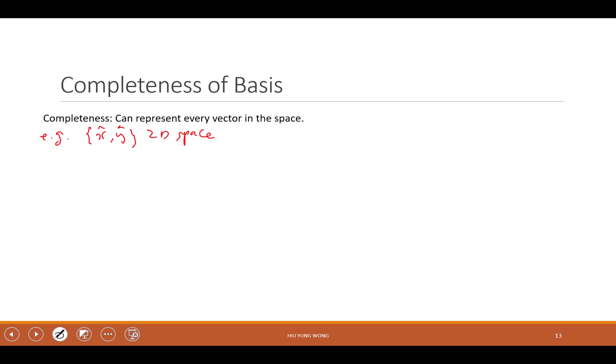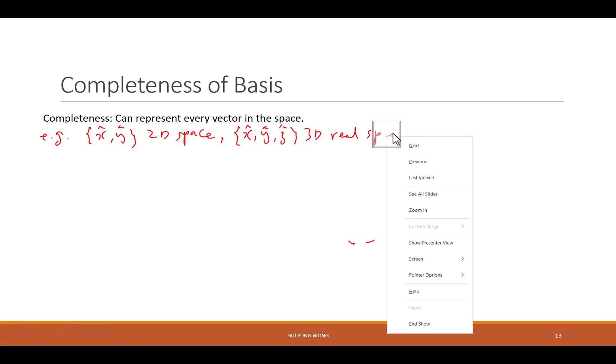What if I have a vector sticking out? Can it be represented by X-hat, Y-hat? No. Then it's not complete if you only use X and Y. The complete basis needs to represent 3D real space — exactly X, Y, Z. For 3D real space, we know this very well.